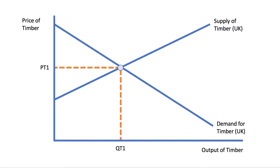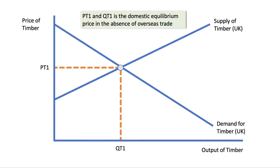In the absence of trade, if UK timber suppliers — forestry in Derbyshire or Northumberland for example — were just supplying to the UK market only, and if there was a demand for timber from construction companies and DIY stores, the equilibrium price would be PT1 and quantity QT1. That is the idea of a closed economic system where no trade takes place.